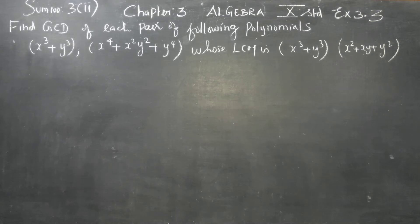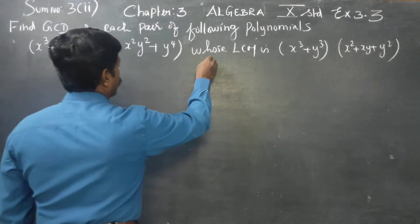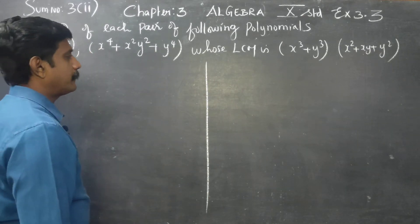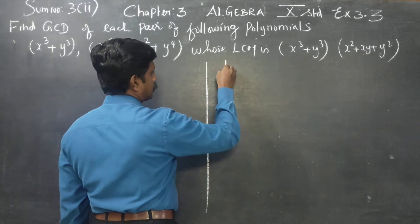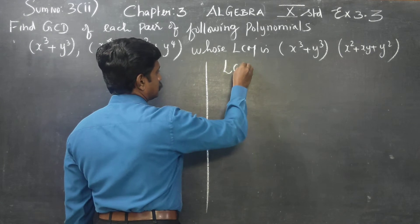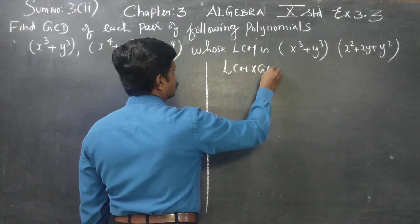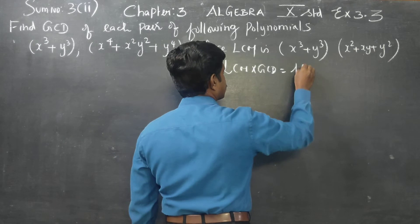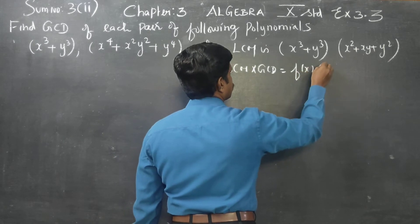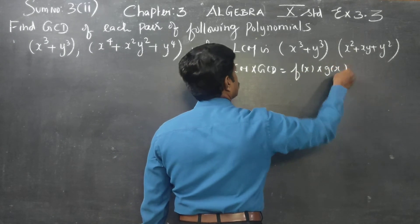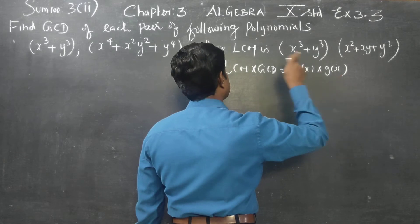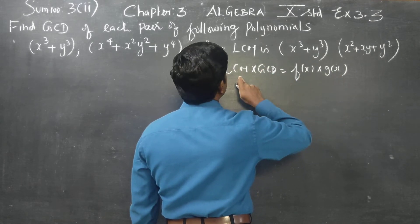Now, before entering into the sum, we will be using the formula: LCM into GCD is equal to F of x into G of x. This is the first polynomial, this is the second polynomial, this is GCD, and this is LCM.